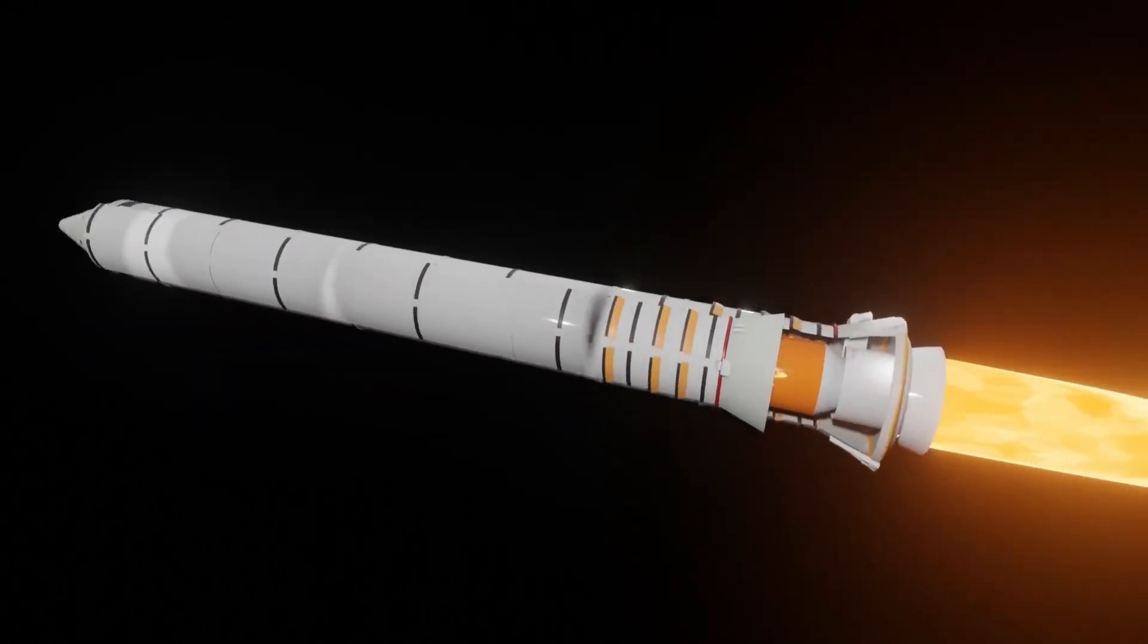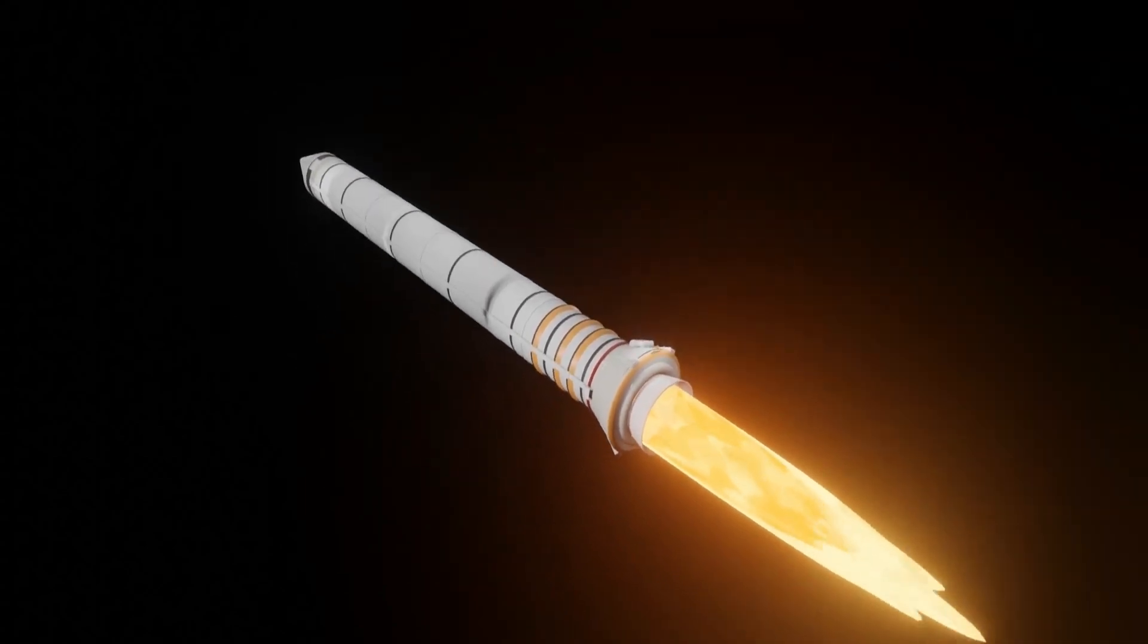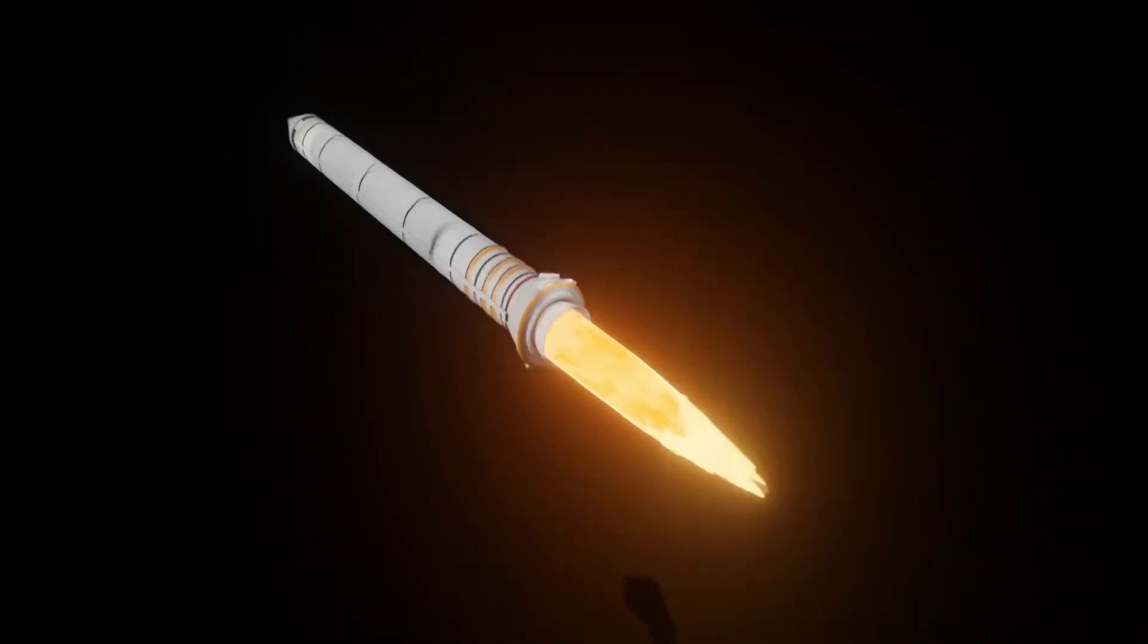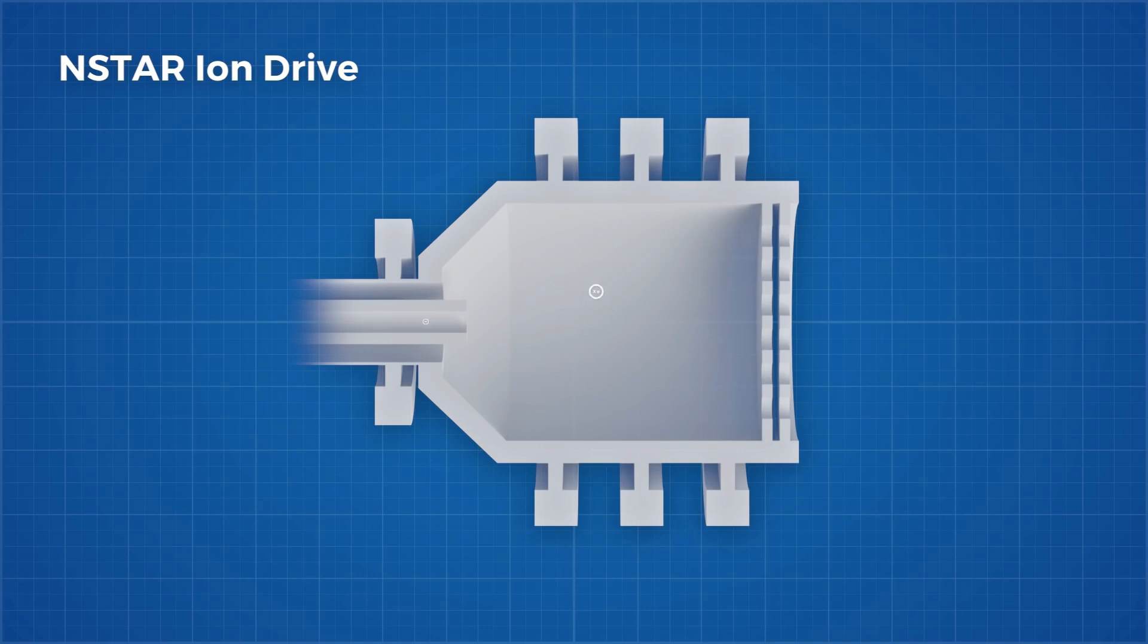The fuel flow rate of a nuclear thermal engine is about 8 km per second. The flow rate of the same chemical engine is about 4 km per second, which makes a nuclear thermal rocket twice as efficient as a chemical rocket.